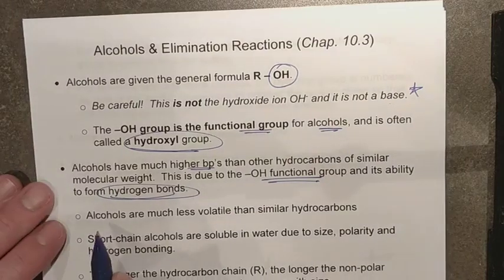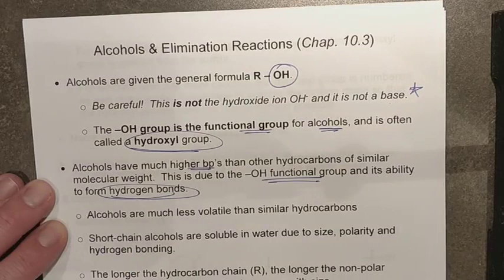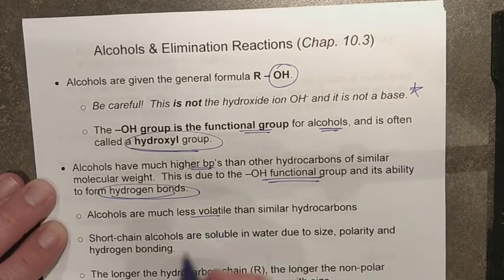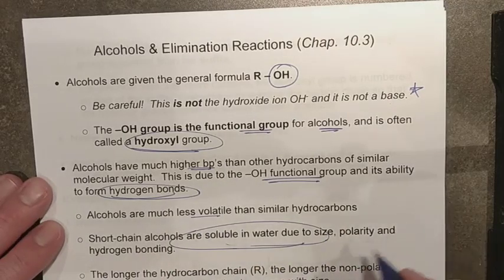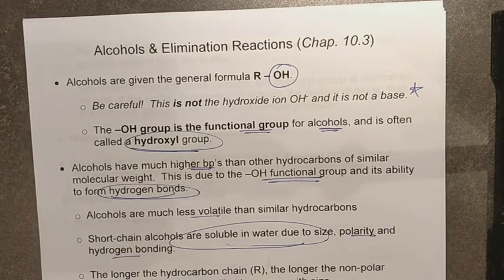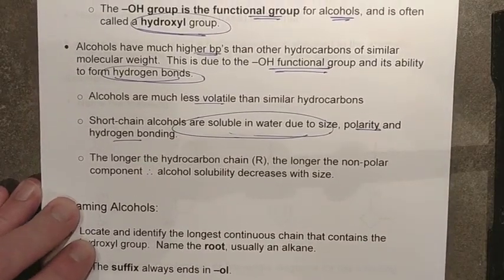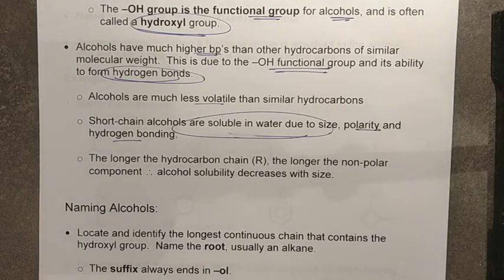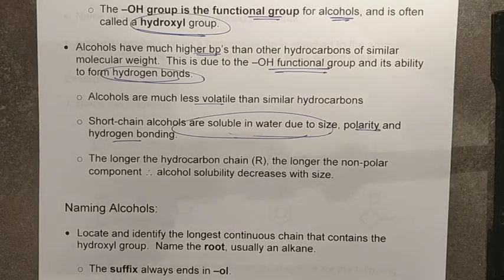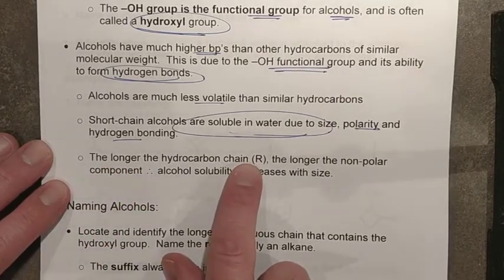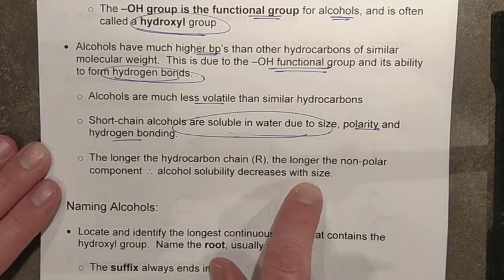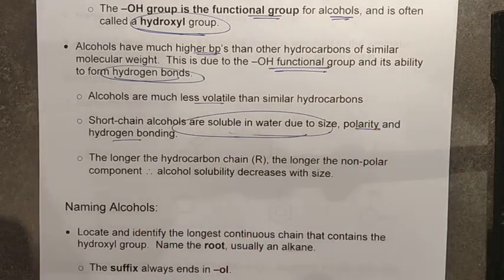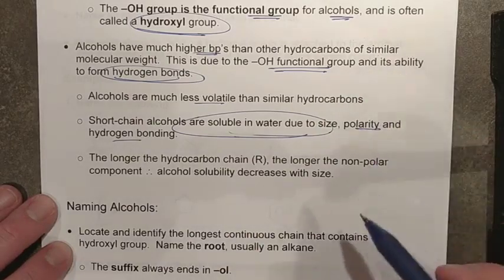Hydrogen bonding affects alcohols just as it does water, giving them much more stability. They tend to be liquid at room temperature rather than gases for equivalent molecular weights, making them much less volatile than similar hydrocarbons. Short chain alcohols have much higher solubility in water due to polarity and hydrogen bonding - this is why ethanol is highly soluble in water, making spirits, wines, and beers possible. Hexanol, on the other hand, is much less soluble because its longer hexane backbone increases the non-polar character.